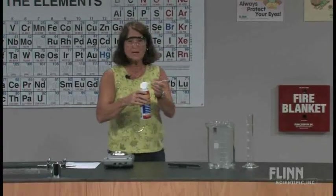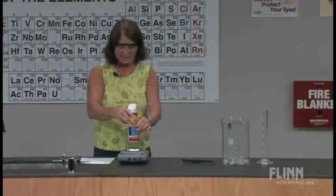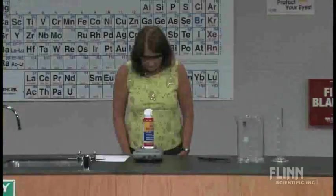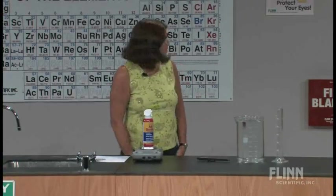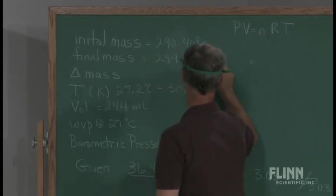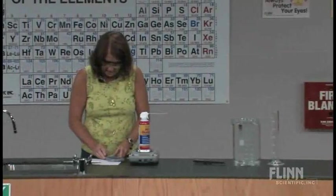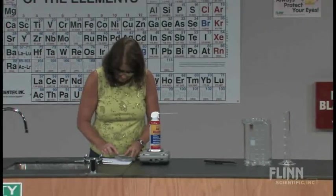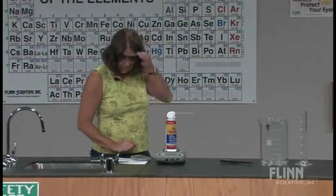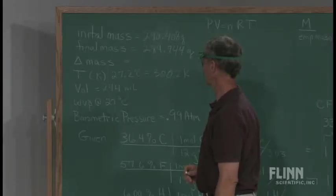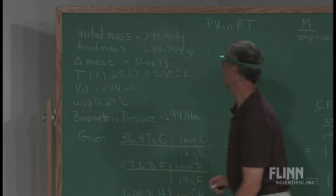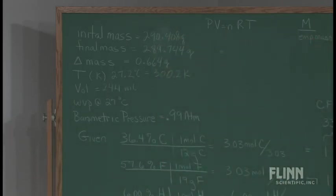The last thing we need to do then is to take the final mass of our air duster. Lance, I need you to record 289.744. A quick calculation. The difference in the mass is going to be 0.664 grams. I think I've got all the data that I need recorded on the board now.